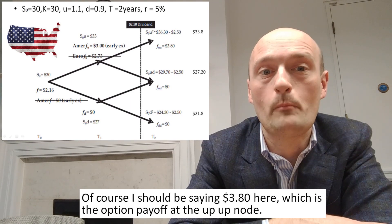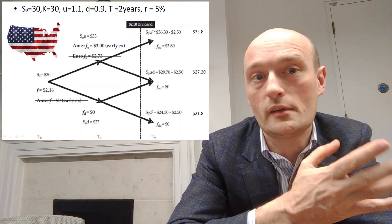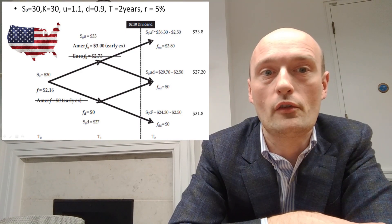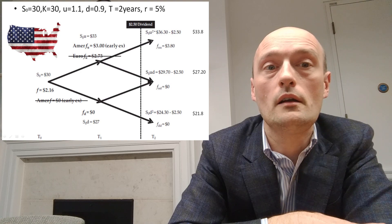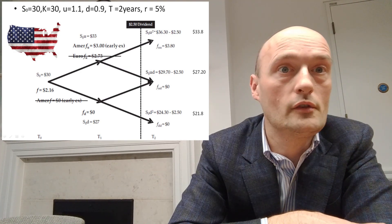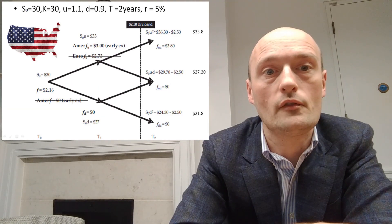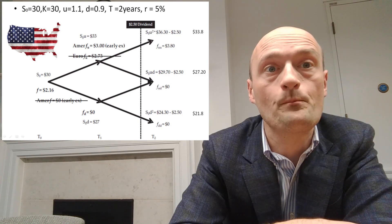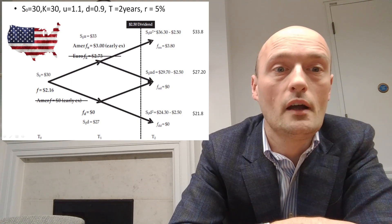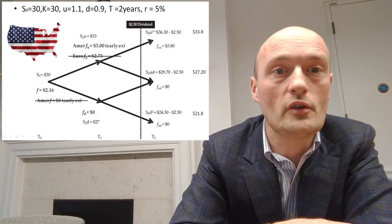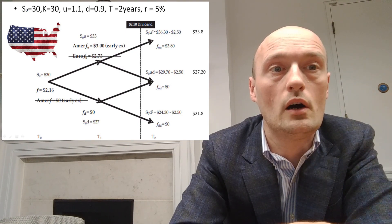We then compare that calculated value to the intrinsic value of the option. If this were a European option it would be worth $2.73 at the up-node. But it's American — early exercise is allowed. With the underlying at $33 and the right to exercise at $30, the option must be worth at least $3. So we replace the $2.73 with $3. We then multiply P by $3 and (1 − P) by $0, present-value it, and arrive at $2.16 as the fair value of the call option.